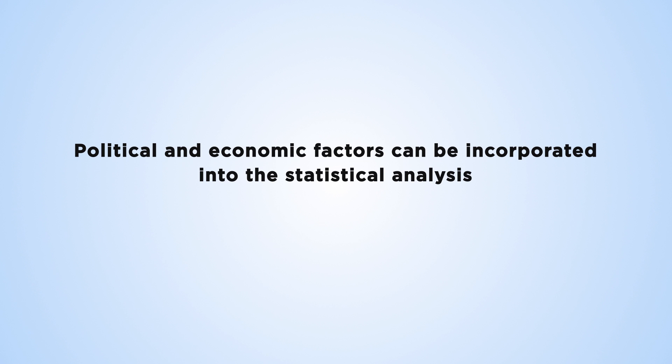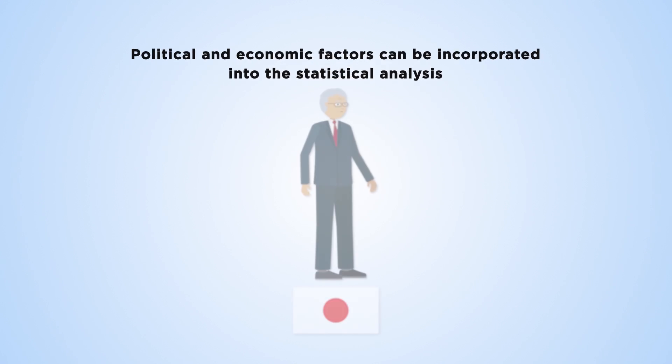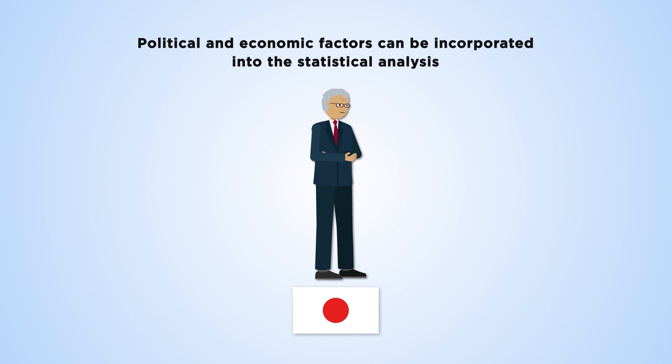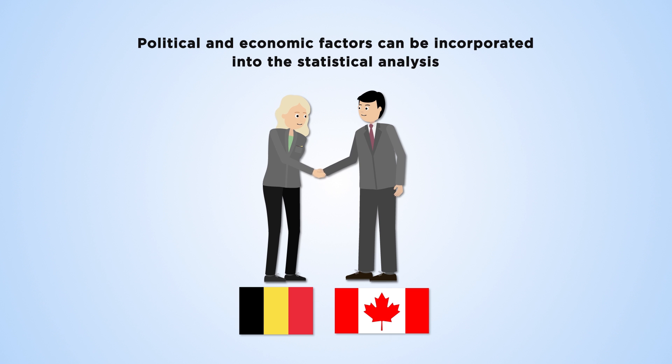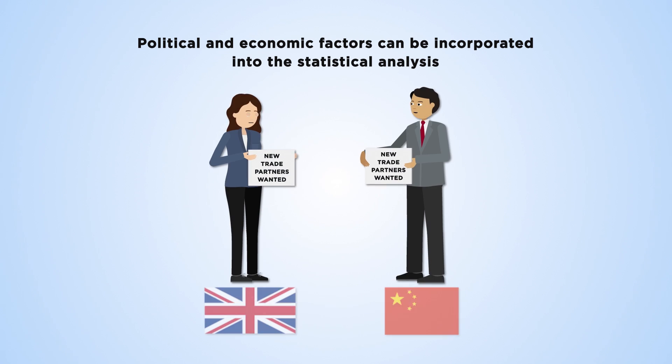We can also incorporate political and economic factors into the statistical analysis. There may be country-specific policies. For example, Japan withdrew itself from the arms trading network in the Cold War period. Germany and Canada maintain relationships with chosen trade partners, while the UK and China look for new partners.